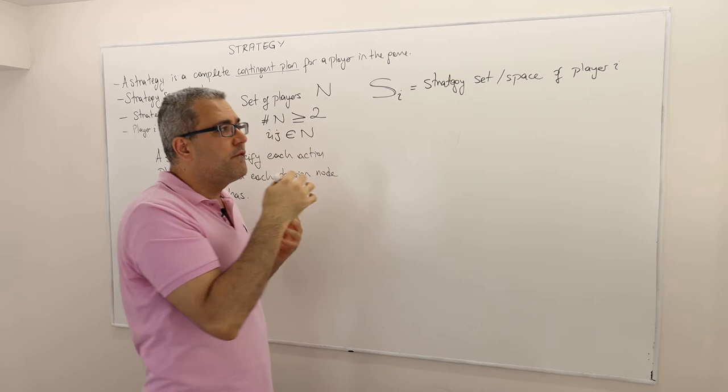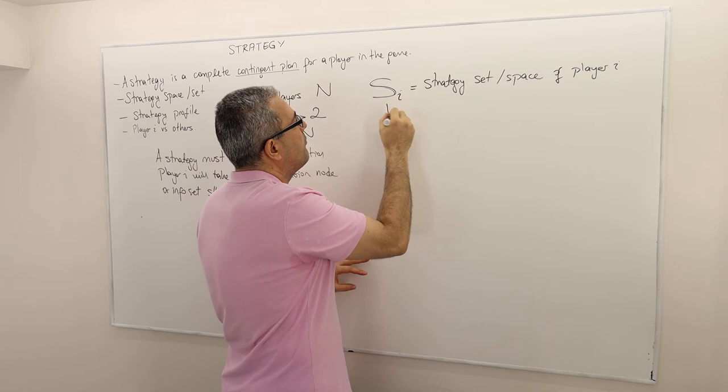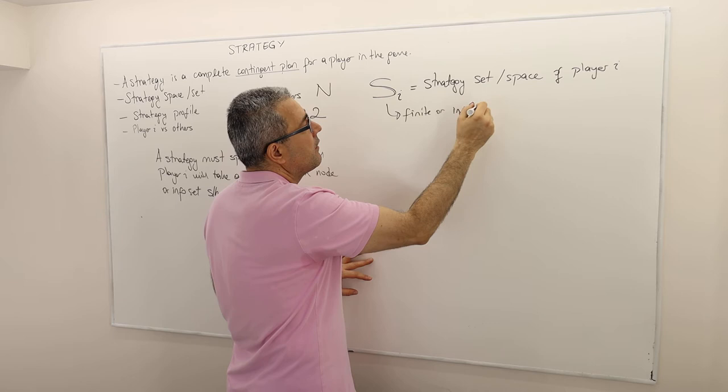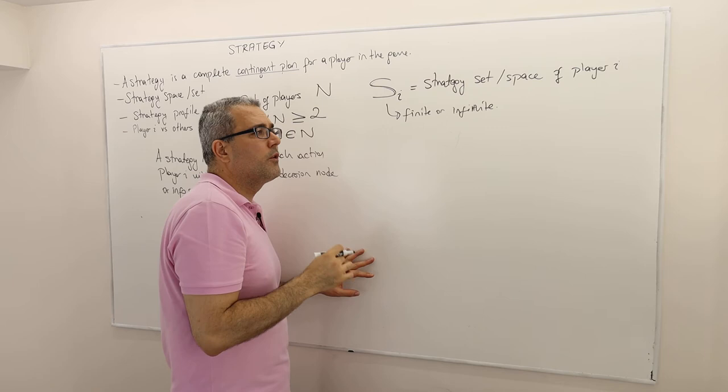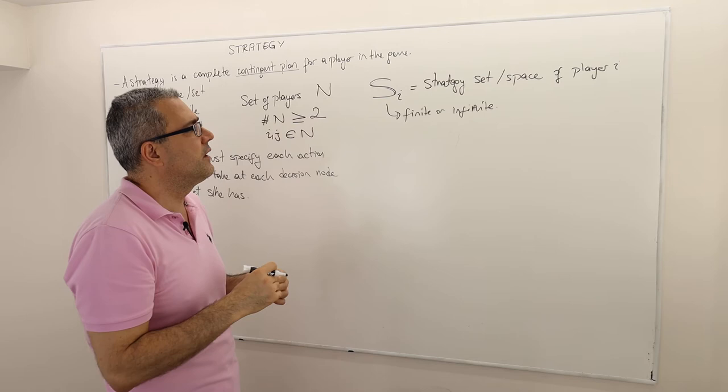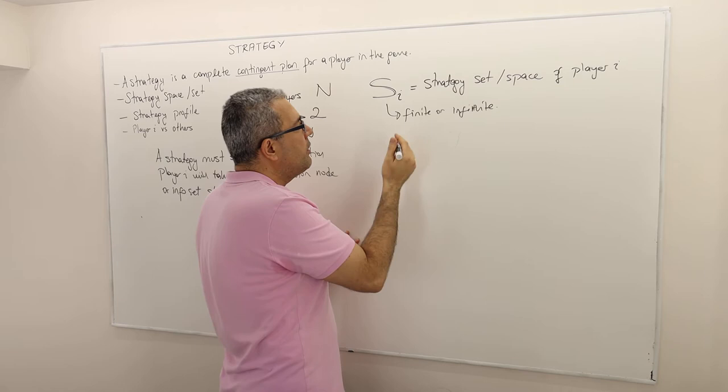We usually denote, and so this is a set. There might be finitely many or infinitely many elements in this set. Maybe finite or infinite. Depends. And we will have examples for both. Most of our examples, initially, will be finite, because it's simpler to work with finite set of strategies. And then, we're going to look at examples where the set of strategies are infinite.